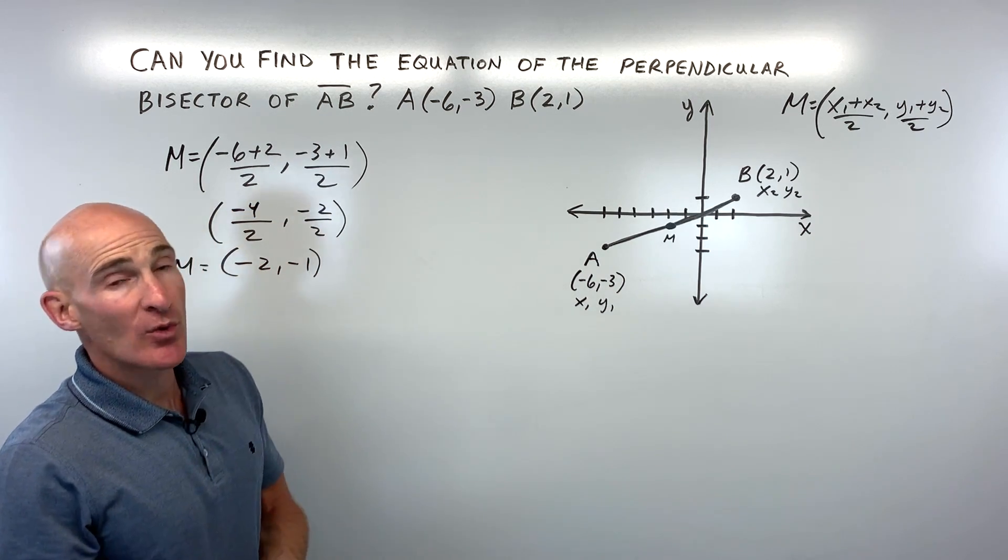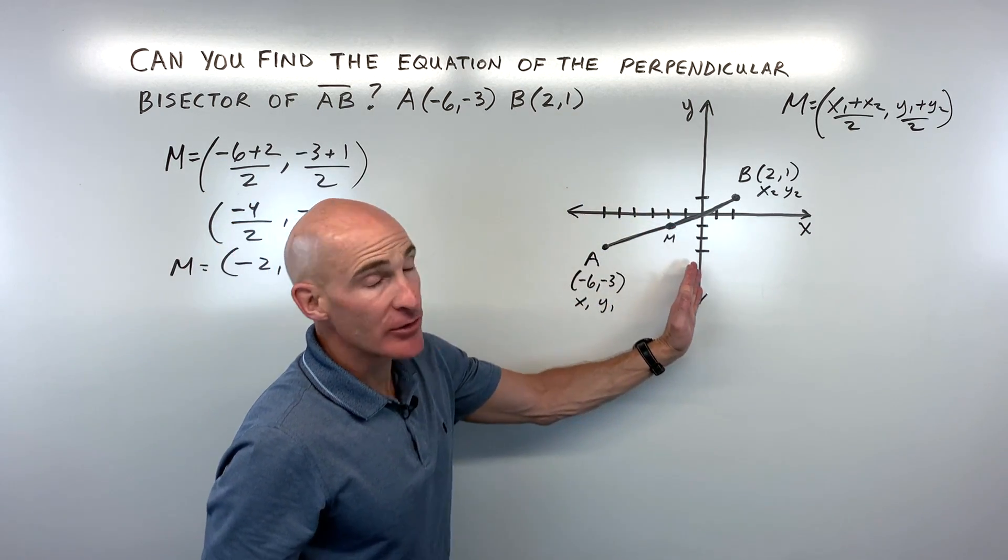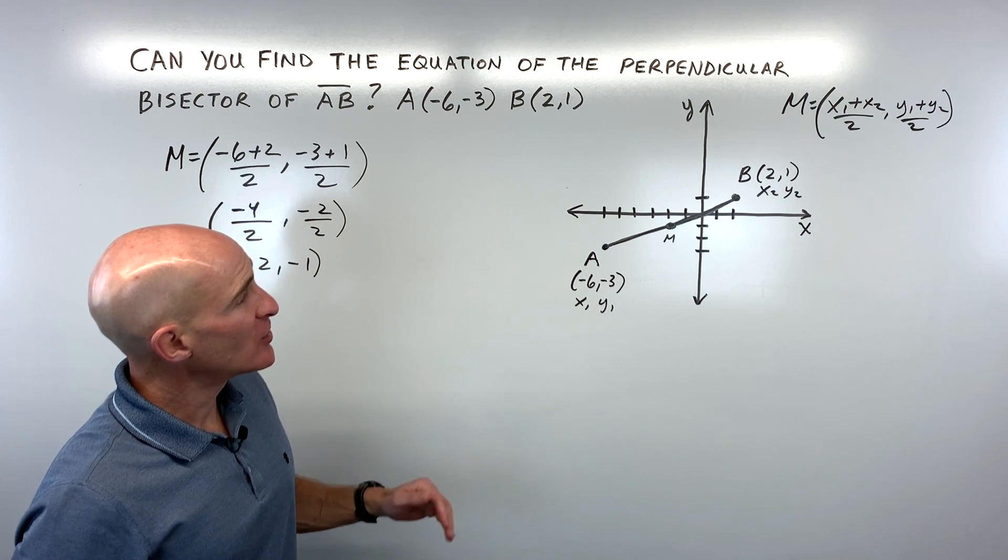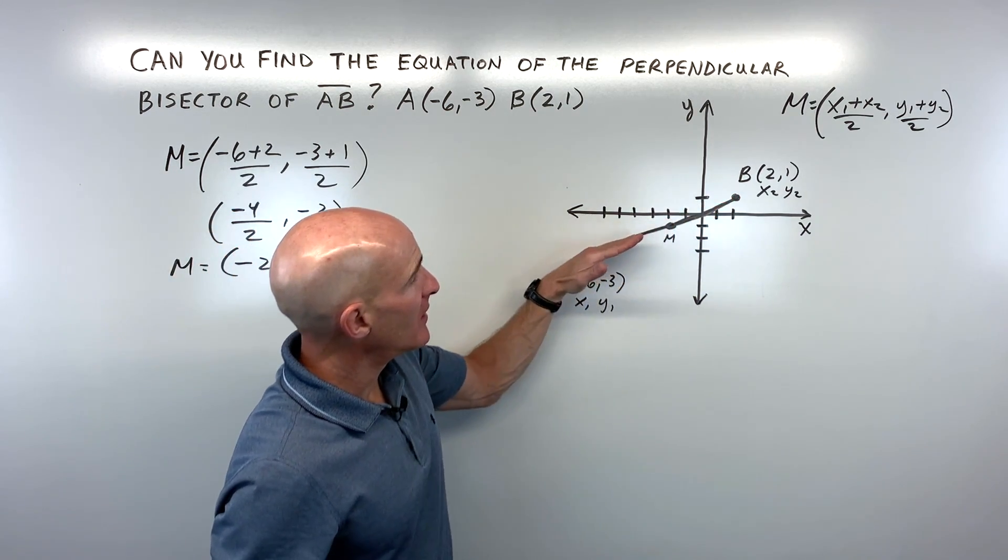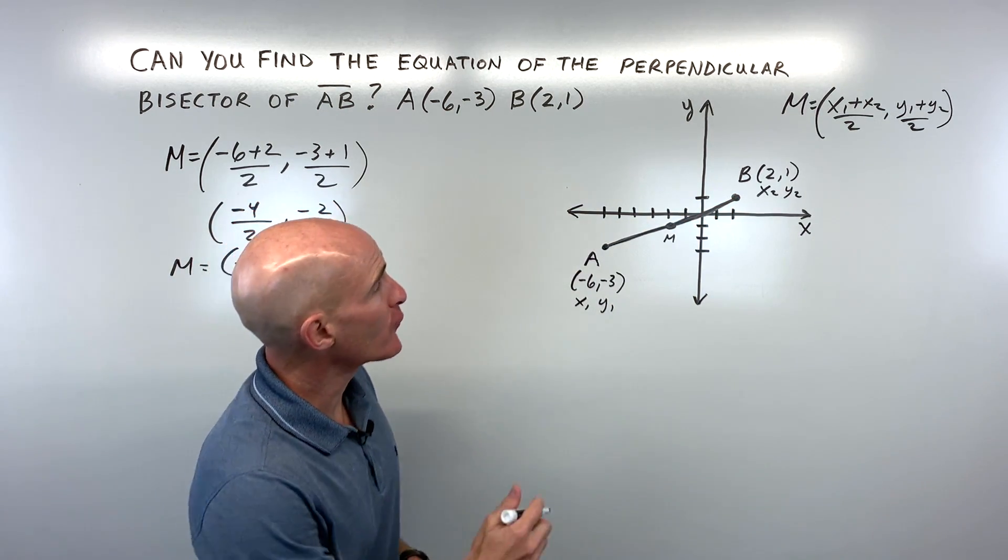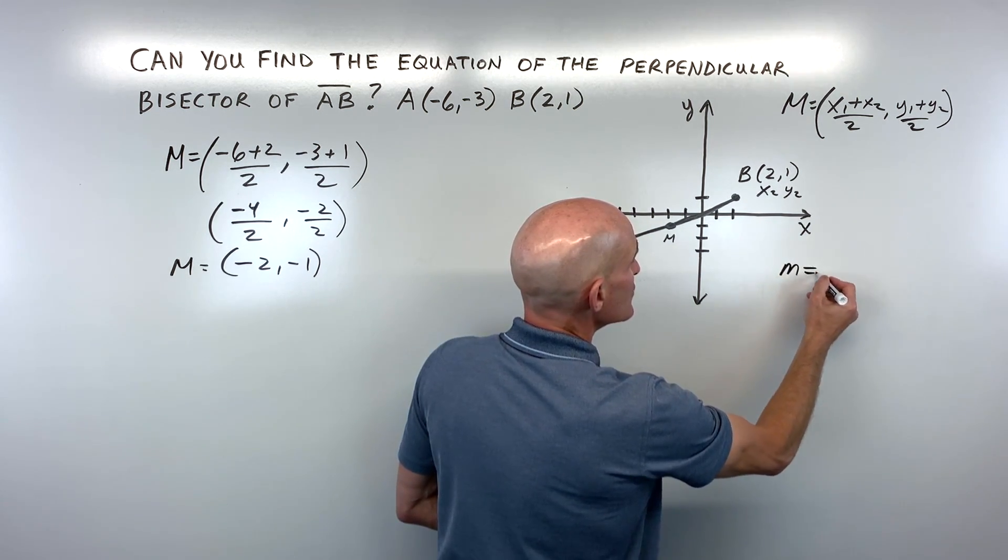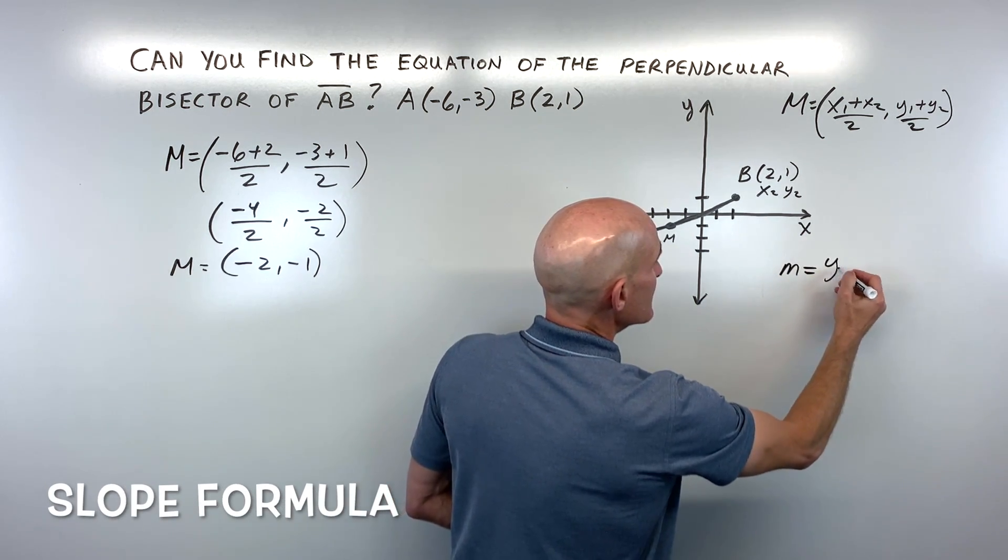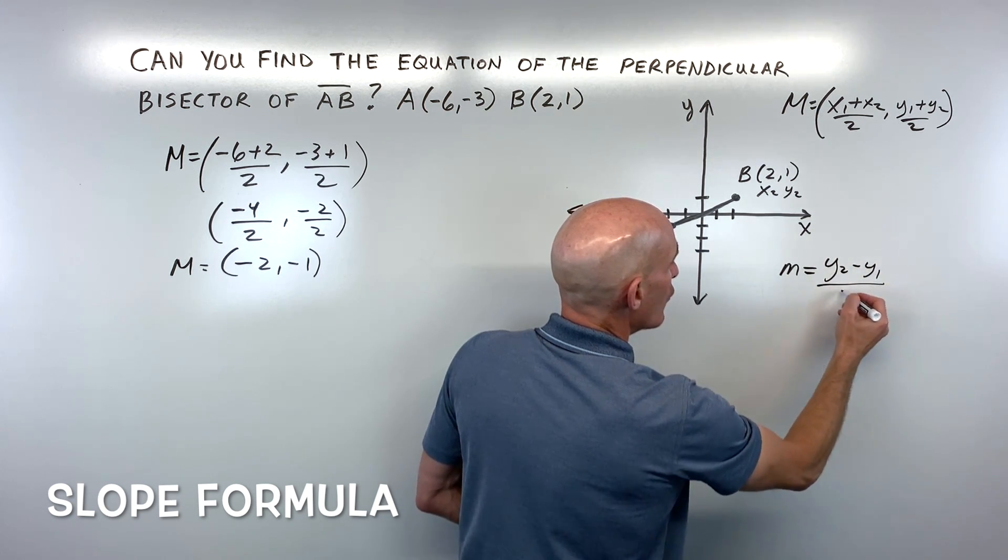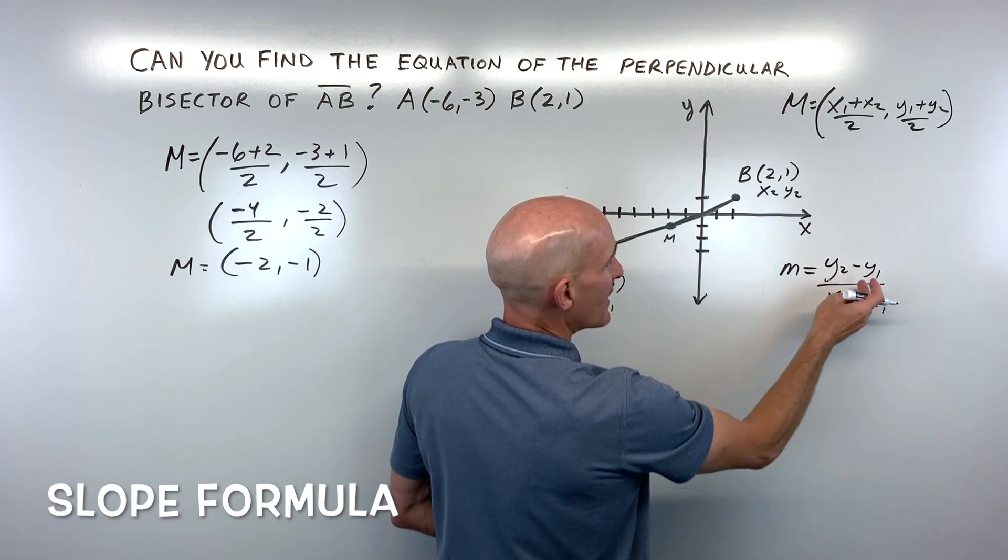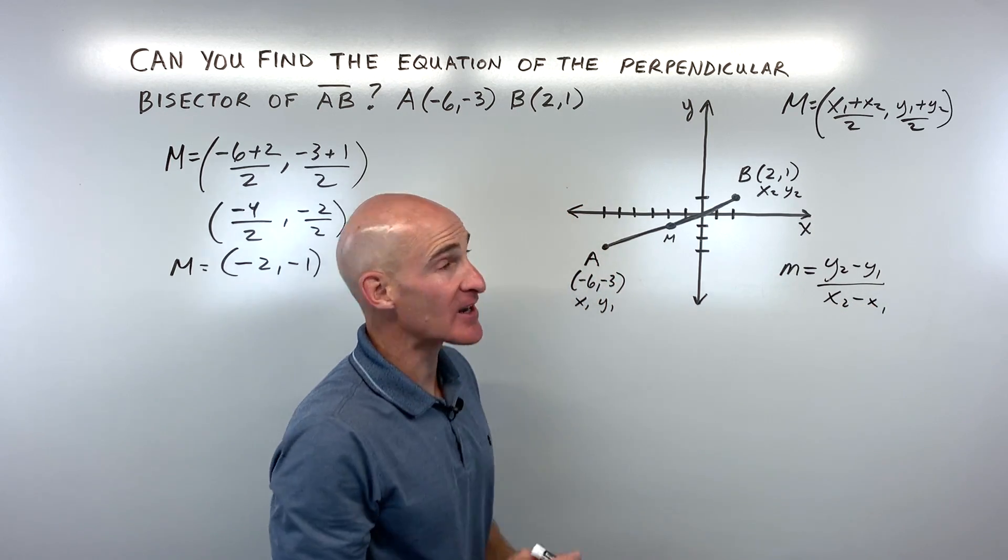And now what we want to do is we want to find a line that's perpendicular or at a right angle. So the first thing we want to do is we want to find the slope of AB. Now another formula you're going to want to memorize or just review here is the slope formula M. It's the difference in the y values over the difference in the x values where we say y2 minus y1 over x2 minus x1.